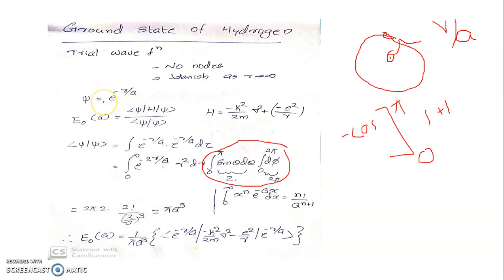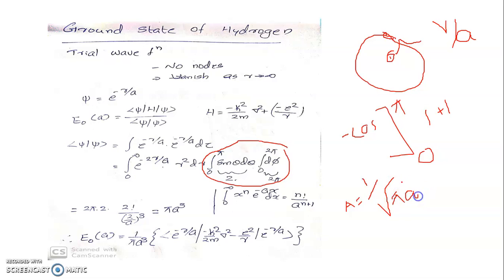If you apply normalization, you get the normalization constant as 1 over the square root of π a³. So with a normalized wave function, the expression for energy becomes: 1 over π a³ times the expectation value of e^(−r/a) acting with the Hamiltonian — which is minus h-bar squared over 2m del-squared minus e-squared over r — on e^(−r/a). We can split this into the kinetic energy term and the potential energy term and take them separately.